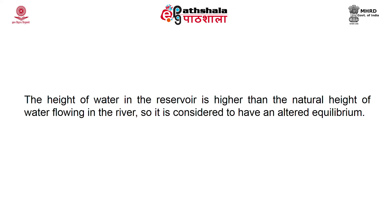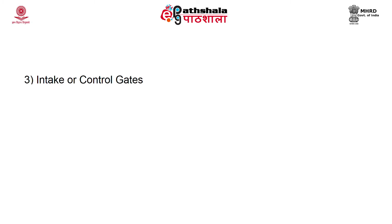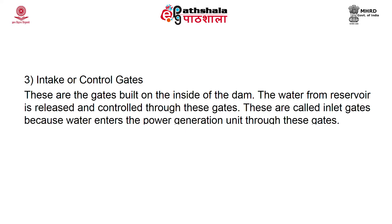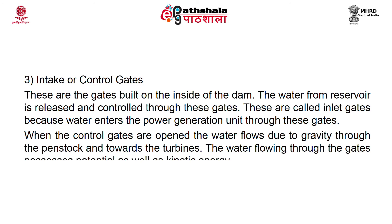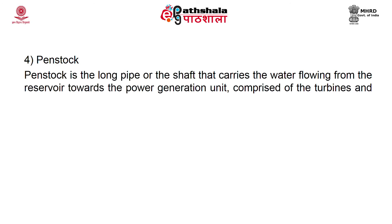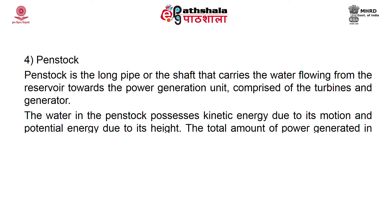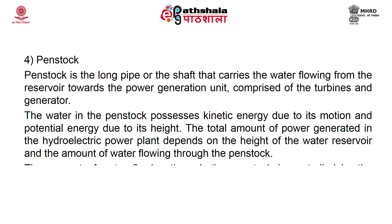The height of water in the reservoir is higher than the natural water flow level, creating an altered equilibrium, which increases overall potential energy and ultimately produces more electricity. Intake or control gates built inside the dam release and control water into the power generation unit. When opened, water flows by gravity through the penstock to the turbine, possessing both potential and kinetic energy. The penstock is the long pipe carrying water from the reservoir to the power generation unit.